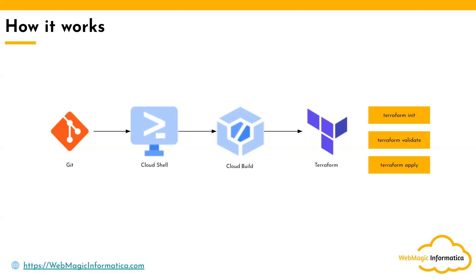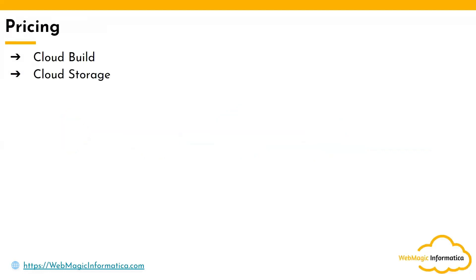This is how Infrastructure Manager works — behind the scenes it uses the Google Cloud Build service to run the Terraform jobs for you. Coming to the pricing part: you are charged for the Google Cloud Build jobs, and Infrastructure Manager will also create certain buckets, so you are charged for those buckets as well.